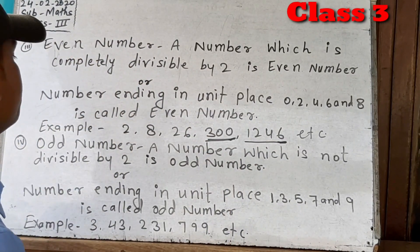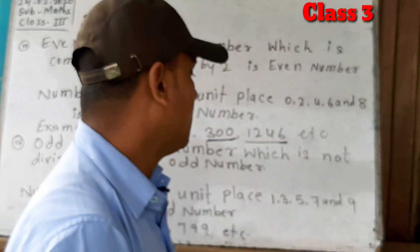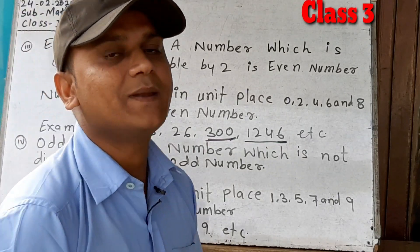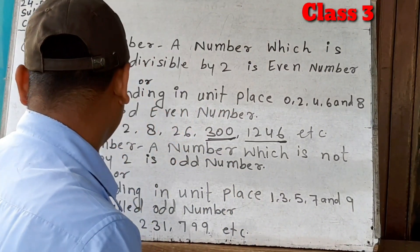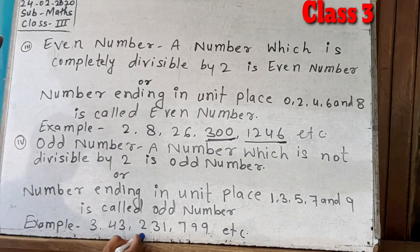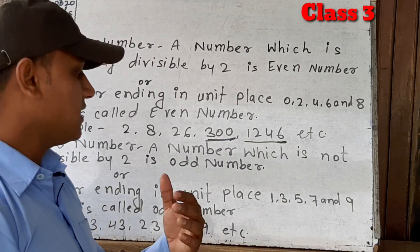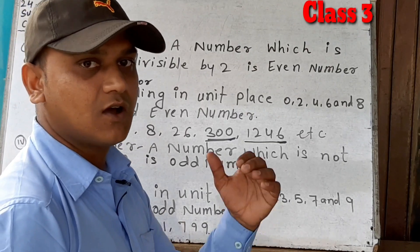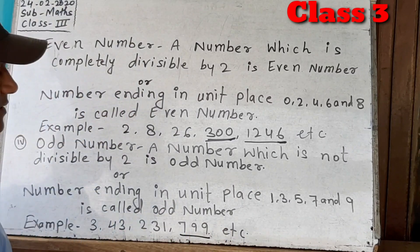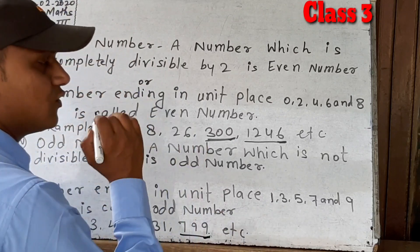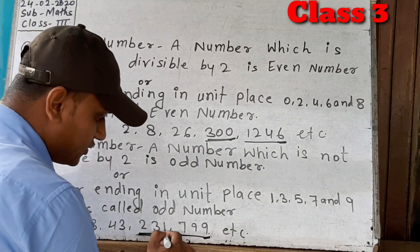Odd numbers: a number which is not exactly divisible by 2 is called an odd number. A number ending in the unit place with 1, 3, 5, 7, or 9 is called an odd number. For example: 3, 43, 231, 799. If the unit place is 3, it is an odd number. For 231, the unit place is 1, so it is an odd number.